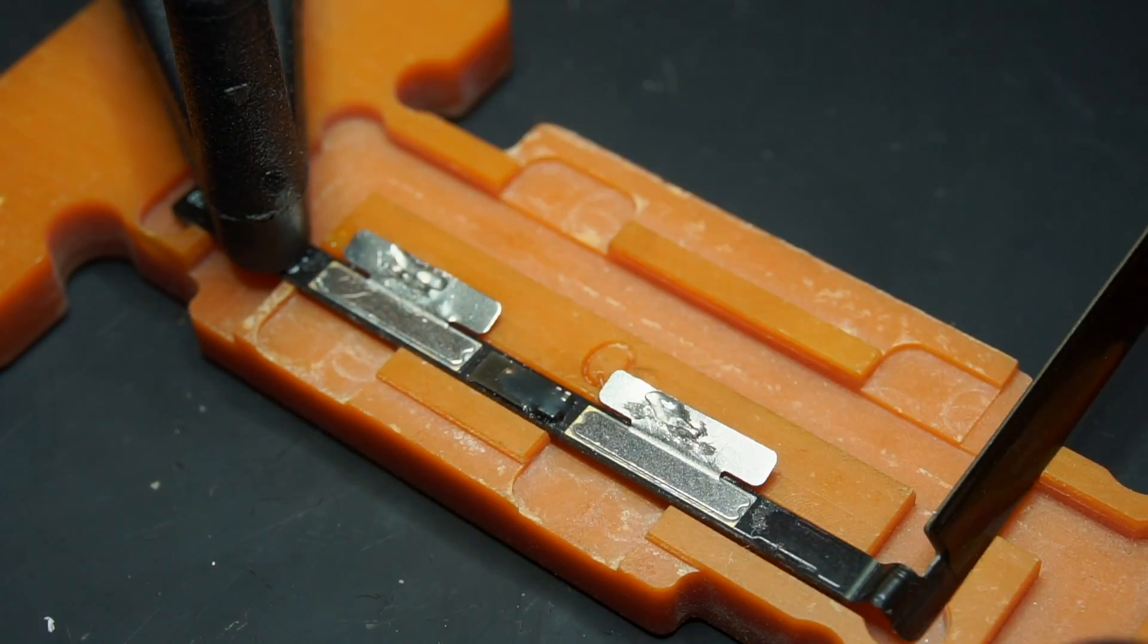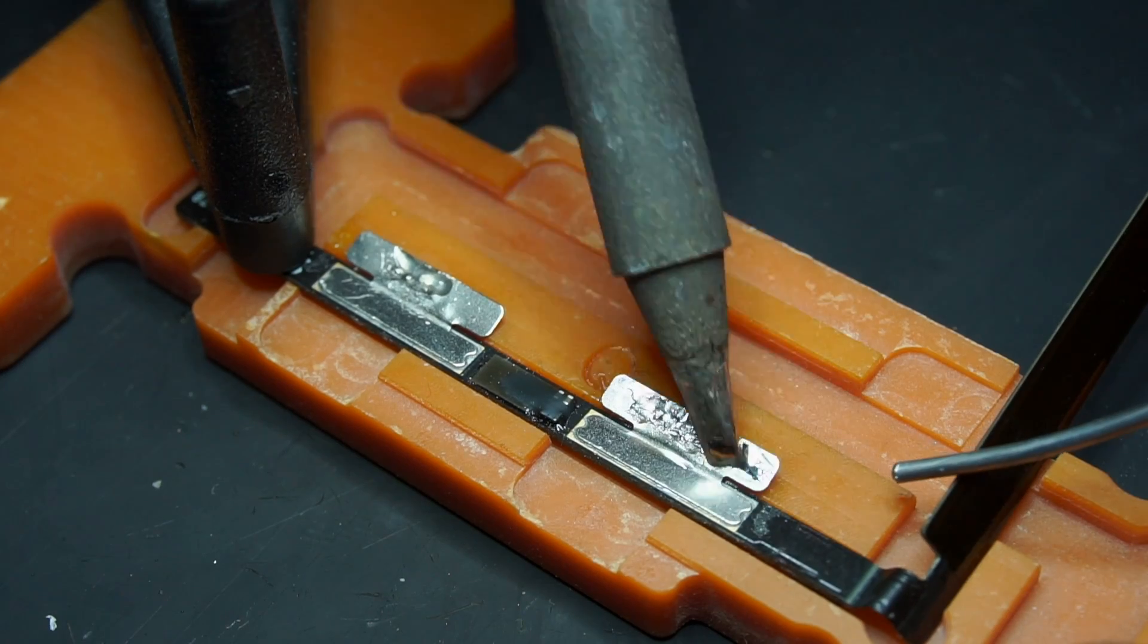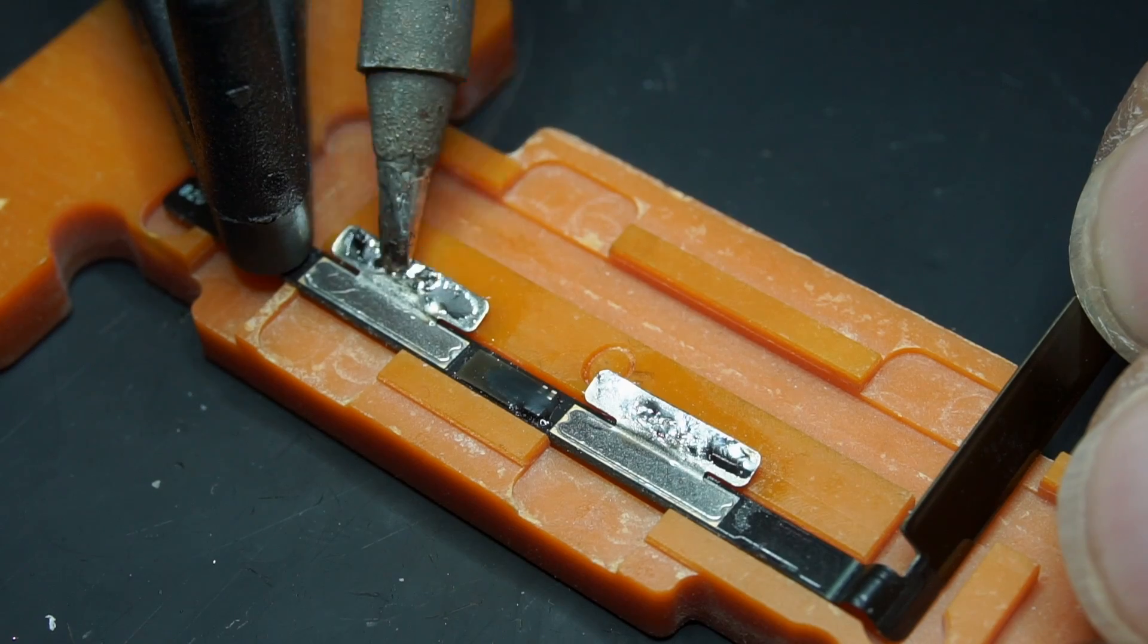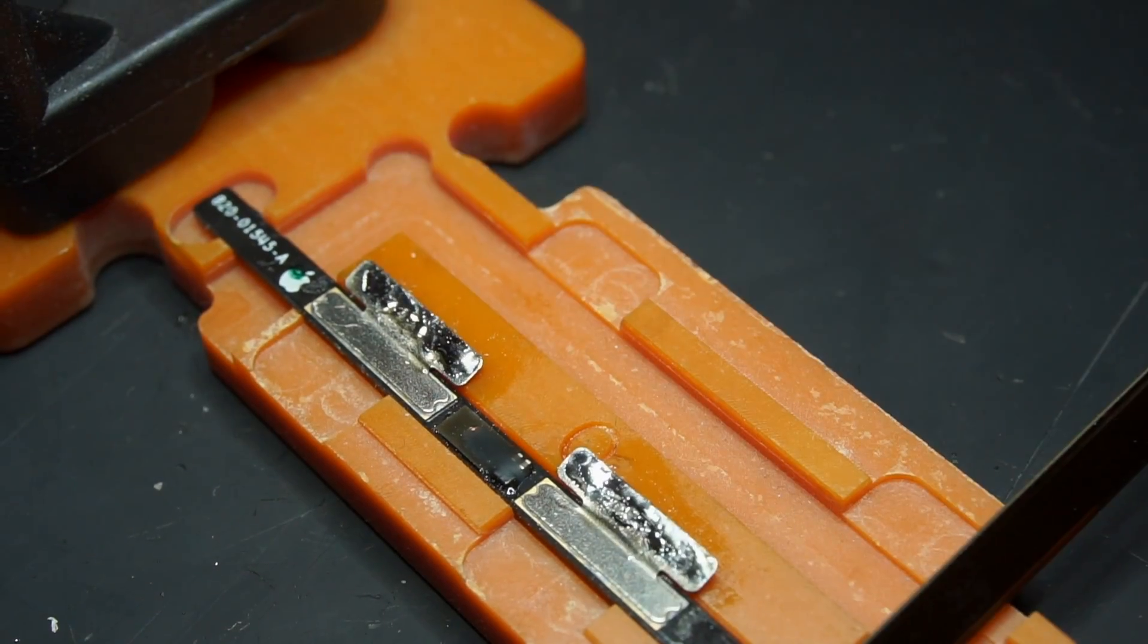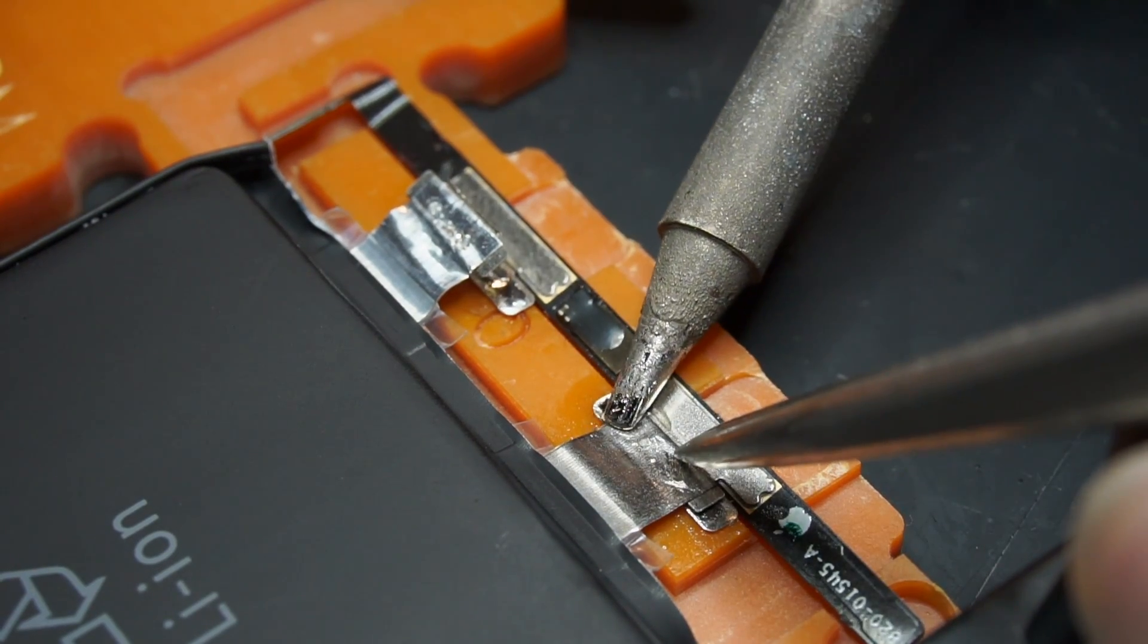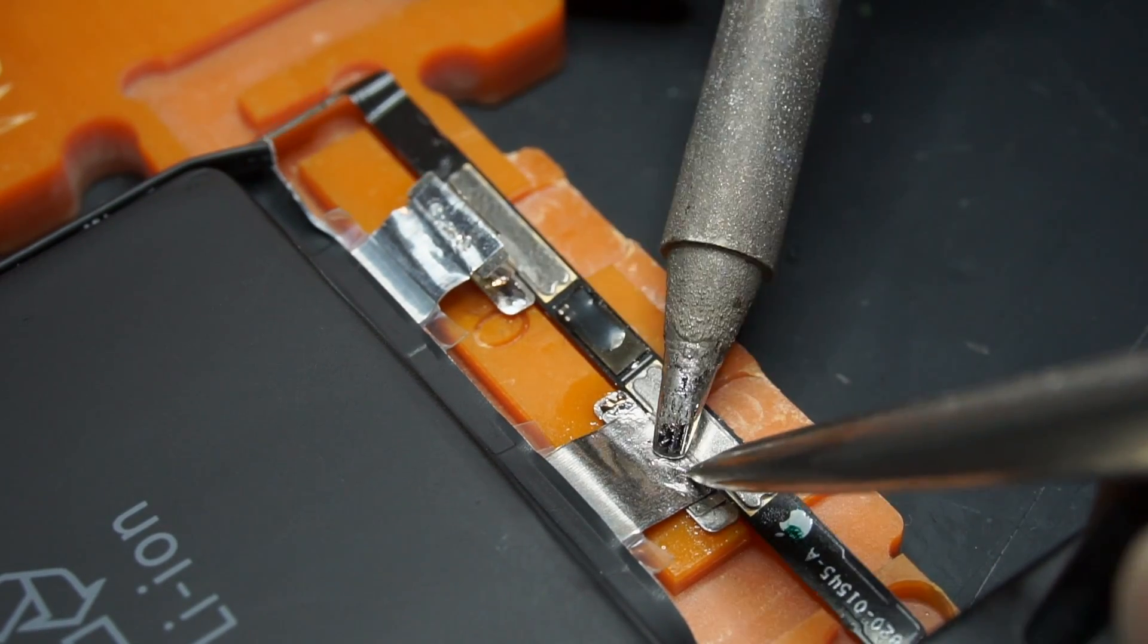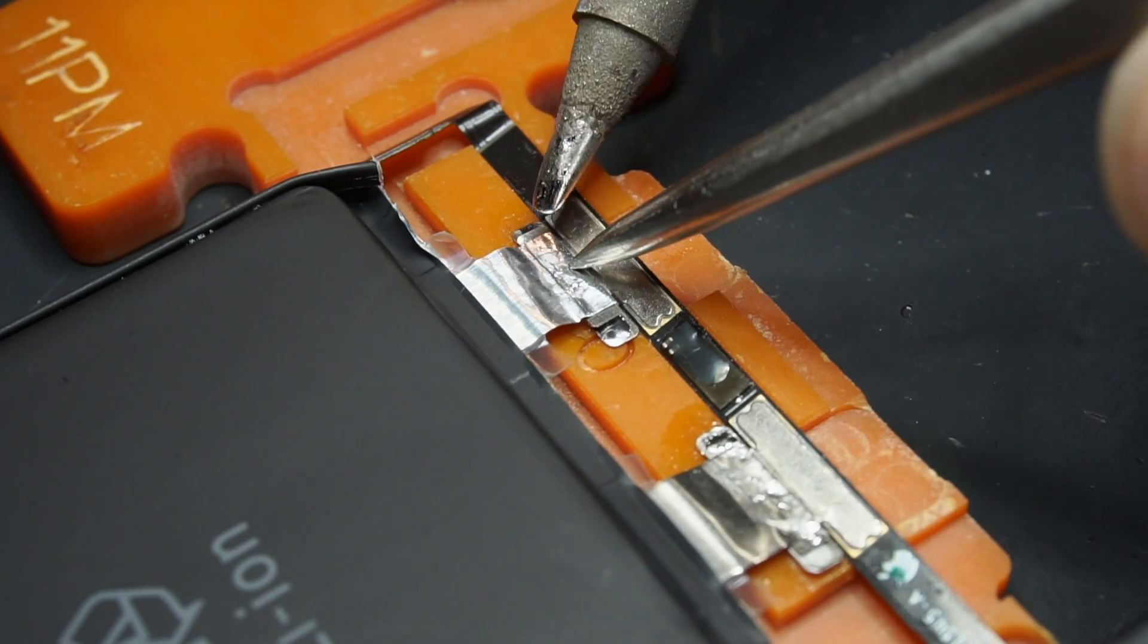Add solder to the pullers. I use a special solder. We'll leave a link to it in the description. Also, add solder to the pullers on the BMS. This method prevents the BMS from overheating and bending.